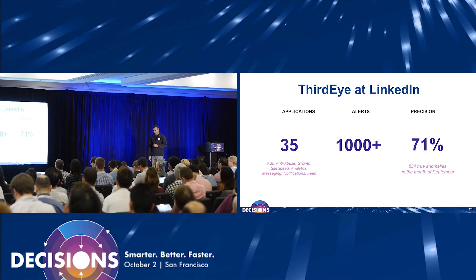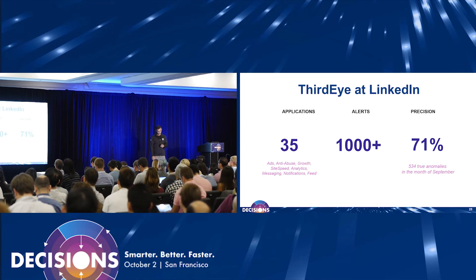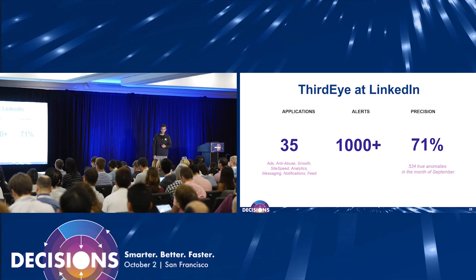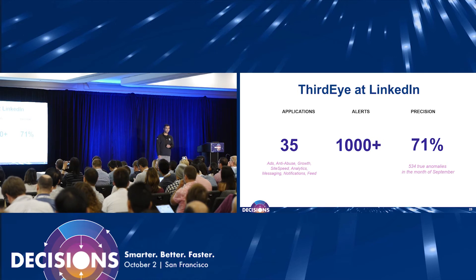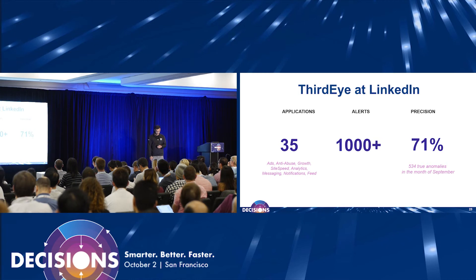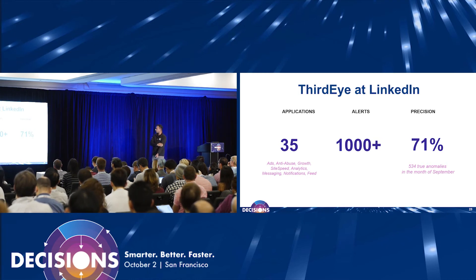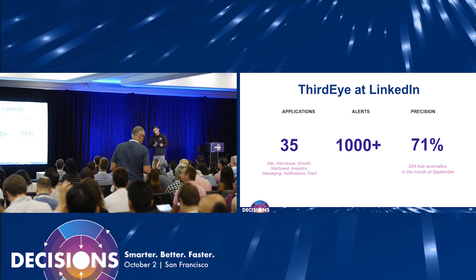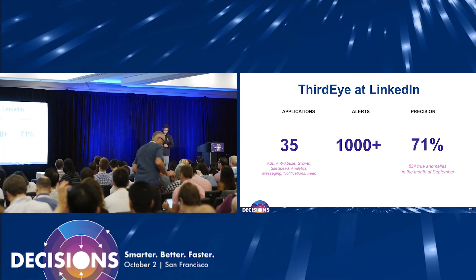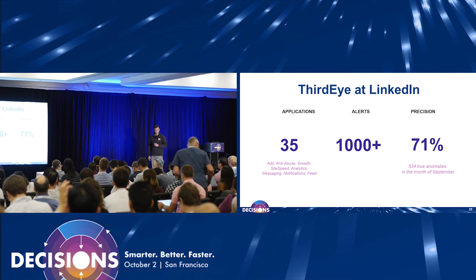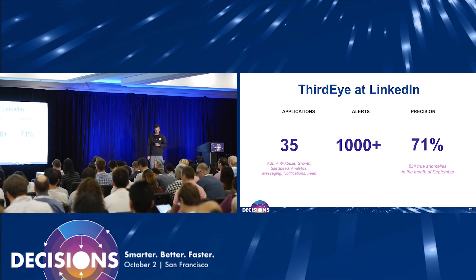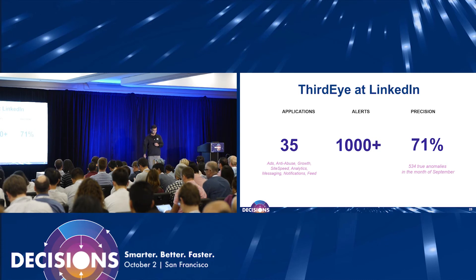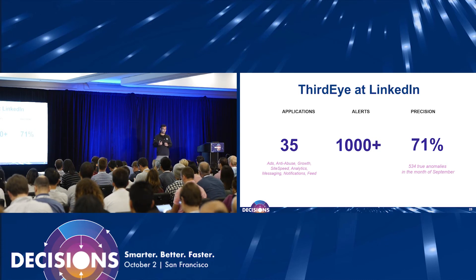Third Eye has been used extensively at LinkedIn. We have almost 35 teams using it, with close to 1,000 alerts set up. In the last month, we had 530 anomalies detected and a precision rate of 71%. We can definitely improve this much further. We don't really have a recall number at this point, because we don't have a lot of people coming back and inputting anomalies which we have not successfully detected.